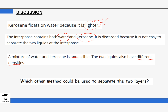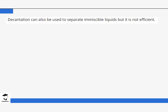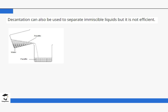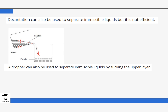The next two methods are decantation and use of a dropper. Decantation is not very efficient — we mentioned this when discussing solid-liquid mixtures as well. For example, with paraffin and water, paraffin sits on top because it is less dense, and water is at the bottom because it is denser. With decantation, we allow the mixture to sit and then pour the top layer into another beaker, but this method is not efficient because you cannot remove the interface cleanly, and some water or paraffin may remain.